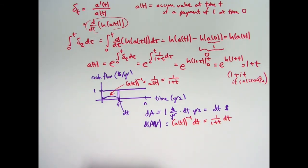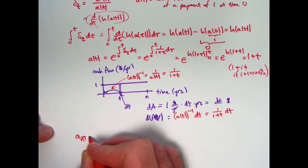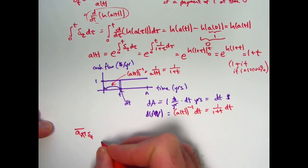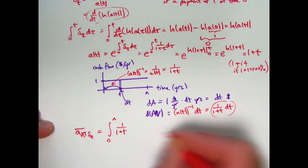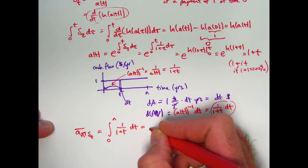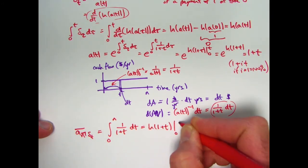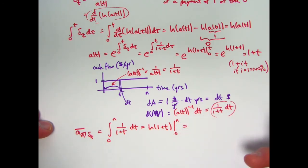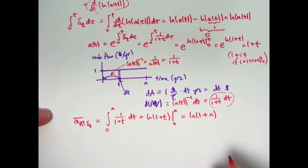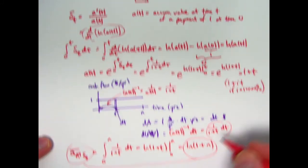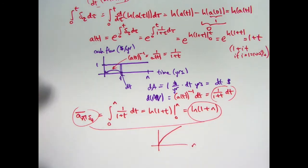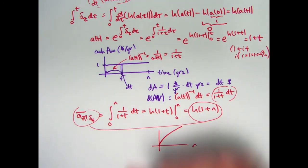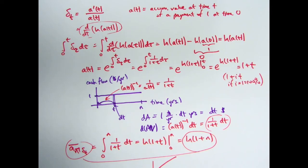The general form of the tiny present value is a(t)^{-1} dt, and for this problem that's 1/(1+t) dt. Integrating from zero to n: the integral of 1/(1+t) dt gives ln(1+t) evaluated from zero to n. Plugging in zero gives ln(1) = 0, so the final answer is ln(1+n). That is the present value of this income stream under this decreasing force of interest. Graphed as a function of n, it's increasing and concave down, since you're being paid for a longer amount of time as n increases.